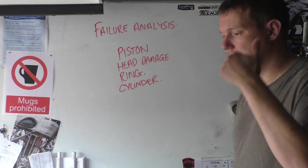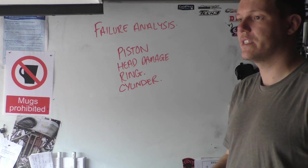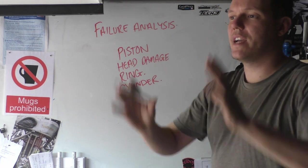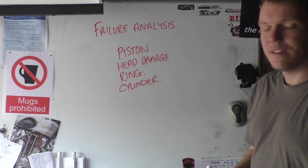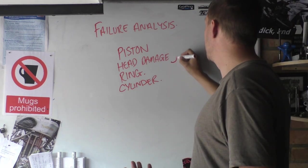So now we know what we've got. We've got a piston looks like shit. We've got cylinder head damage. We've got head damage. We have rings that are probably not in the best state ever. And we've got cylinder damage. So that's the first thing you look at. You say piston, head, rings, cylinders.